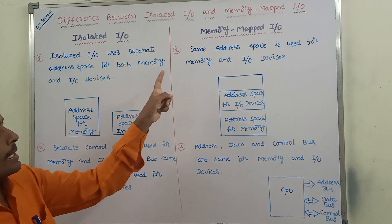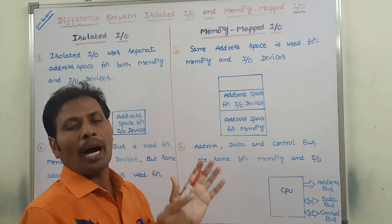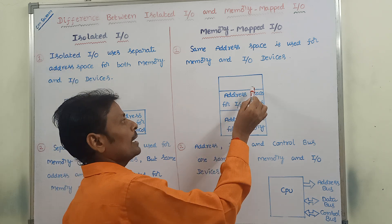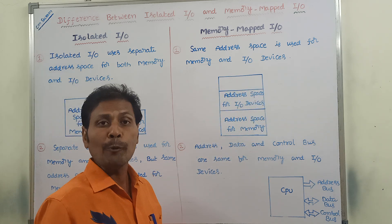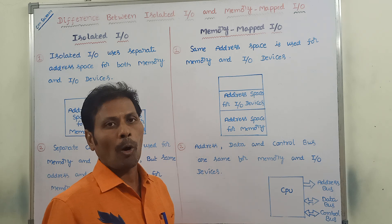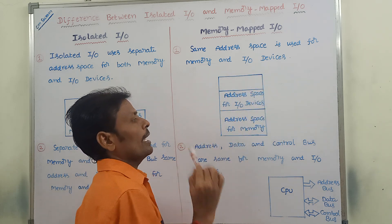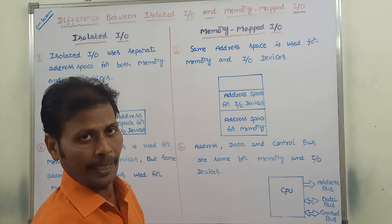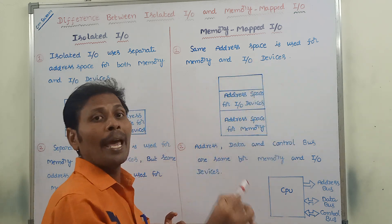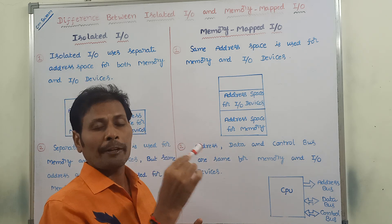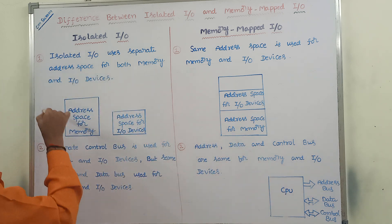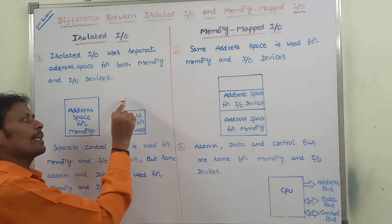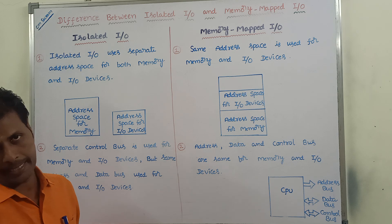Whereas in the case of memory mapped I/O, the same address space is assigned for both memory and I/O devices. Part of this address space is allocated for I/O devices for performing read and write operations, and the remaining address space is assigned for memory operations such as read and write. So the same address space is shared between memory and I/O devices, unlike isolated I/O where separate address spaces are used.